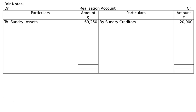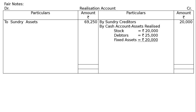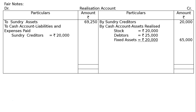The realized assets — by cash account, assets realized: stock Rs. 20,000 (this is included in sundry assets), stock realized Rs. 20,000, debtors Rs. 25,000, and other fixed assets realized Rs. 20,000 — in all Rs. 65,000 was received. Liabilities and expenses paid: Rs. 20,000 to sundry creditors and realization expenses of Rs. 350 to be paid. Total payment is Rs. 20,350.